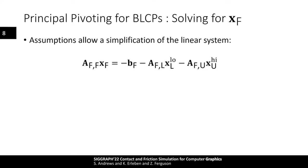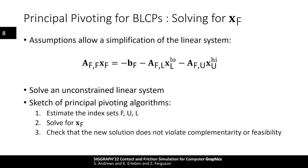Once each variable has been assigned an index set label, this permits a repartitioning of the boxed LCP according to the free and tight sets. For the free variables, by definition the residual velocities V-sub-F are zero, and for the tight variables the unknowns X are in fact known and have values defined by their bounds. This allows a rewrite of the equations involving only the first row of the partitioned system — associated with the free index set — reducing the problem to a simple unconstrained linear system that any number of linear solvers may address. This allows us to sketch the main steps of the principal pivoting algorithm: starting from an estimate of the index sets, solve for the free variables, then check if the new solution violates any feasibility or complementarity constraints, and if any do, pivot those variables to a different index set and repeat.